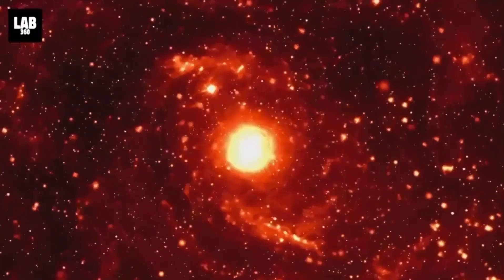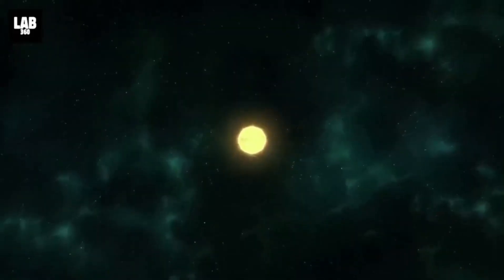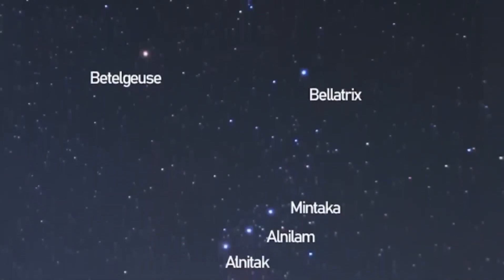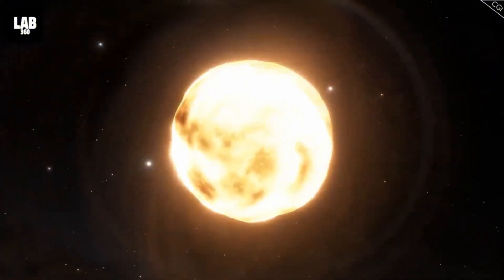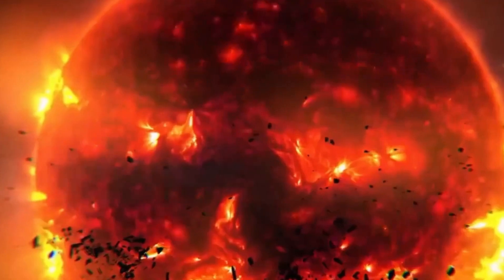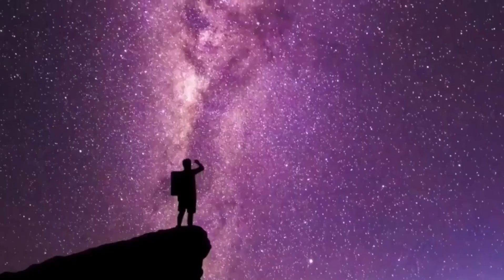When the explosion occurs, Betelgeuse will release an immense amount of energy, more in a few minutes than our sun will emit over its entire lifetime. This energy will take the form of visible light, gamma rays, and other forms of radiation. The shockwave from the explosion will travel outward, dispersing heavy elements like iron, gold, and uranium into the surrounding interstellar medium.